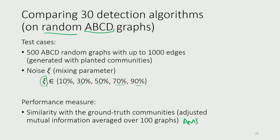If an algorithm retrieves the ground truth perfectly, that's great, but it almost never happens. With a network of hundreds of nodes and k groups — say k is 20 — there are 20 to the power of 300 possible solutions. If an algorithm finds the right one, that's remarkable. Even if it returns something close, with a relatively high AMI between the partition and the ground truth, it has good performance.